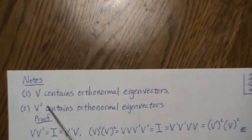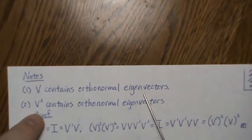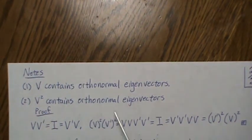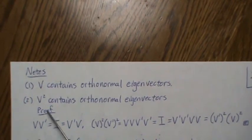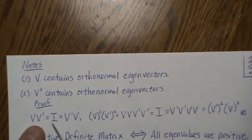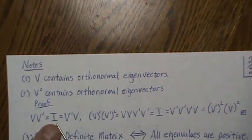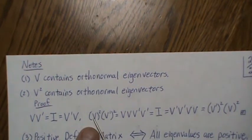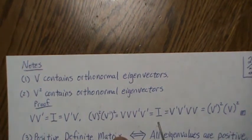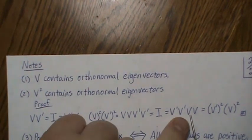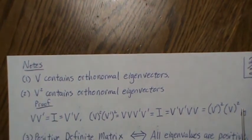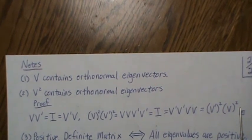A few notes: V contains orthonormal eigenvectors, and V squared also contains orthonormal eigenvectors — not the same ones since we're squaring it. Here's a proof: if V contains orthonormal eigenvectors, then V'V equals the identity. For V squared: writing it out, V squared times V' squared equals V squared times V' squared, which gives the identity. So V squared also has orthonormal eigenvectors.